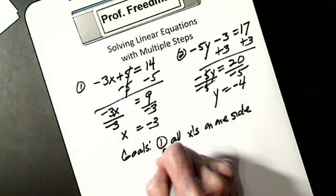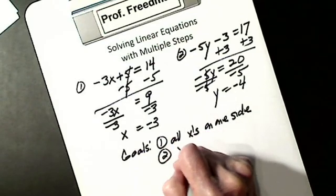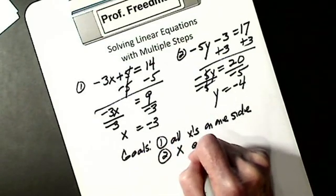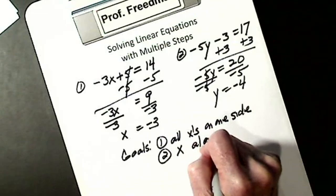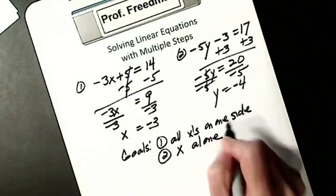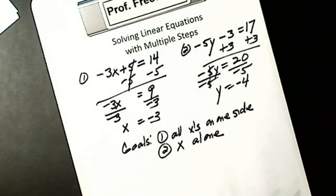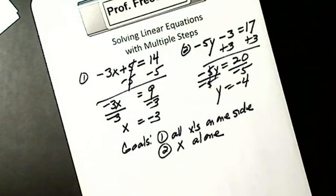My second goal, I want X alone, or I want to isolate X. So whenever you get stuck, you think: I want all X's on one side, X alone.